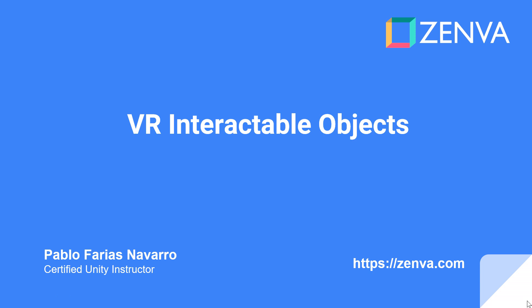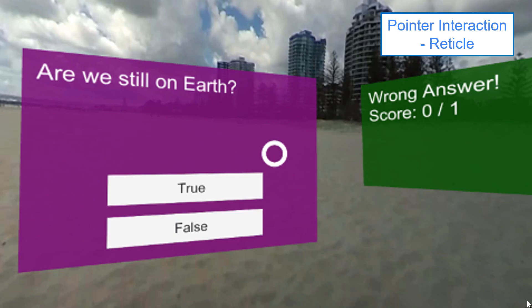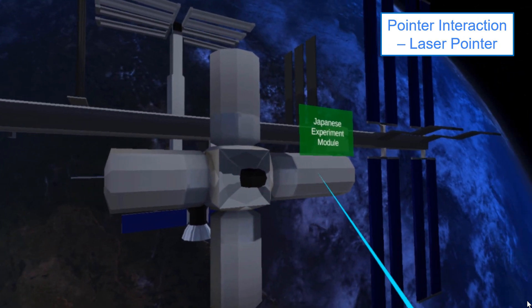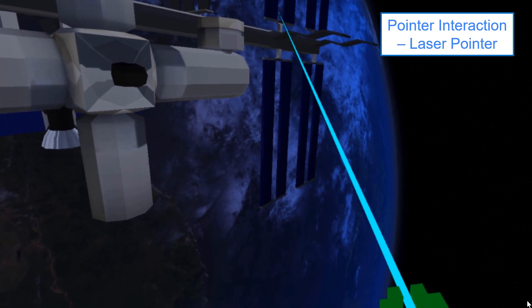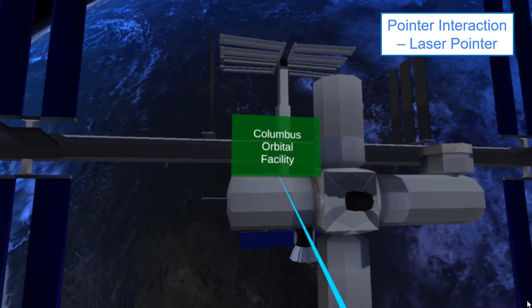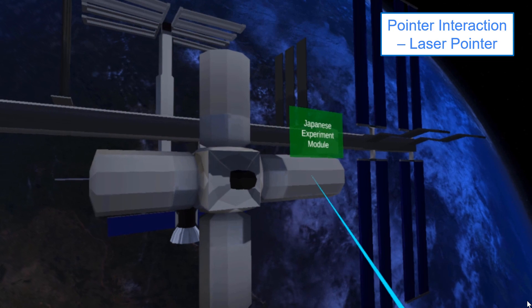In virtual reality experiences, you'll often want to interact with objects from your surroundings. A commonly used system in gaze-based experiences is the reticle — think of it as a mouse cursor in your virtual world that you can use to select things and to point at things in your virtual environment. When you have a hand-tracked controller, it is common to use what I like to call the laser pointer, and that allows you to interact with elements around you as well.